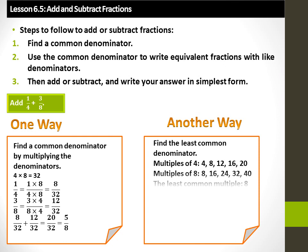Another way is to list multiples of 4 and multiples of 8. The least common multiple is 8. So write both fractions with a denominator of 8: 1 over 4 is equal to 2 over 8, and 3 over 8 remains the same. 2 over 8 plus 3 over 8 is equal to 5 over 8.